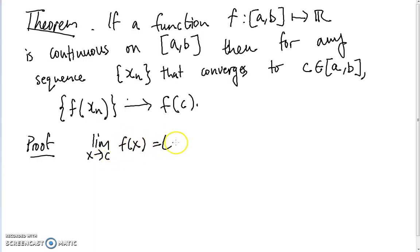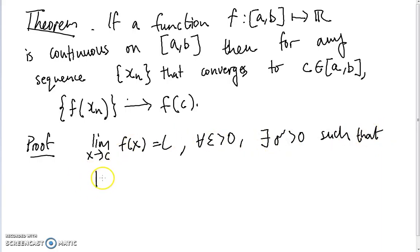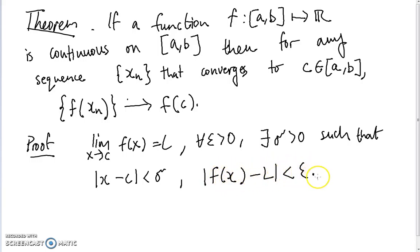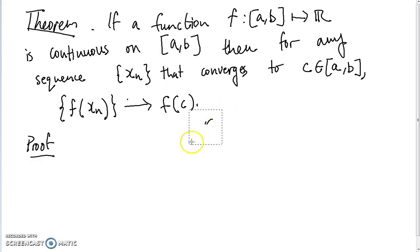For the proof, recall that the limit as x approaches c of f(x) equals L means: for all epsilon greater than zero, there exists a delta greater than zero such that if x is a distance less than delta away from c, then the distance between f(x) and L is less than epsilon. This can be done for every positive epsilon — you can always find a delta such that points within distance delta of c have f values within epsilon of L.